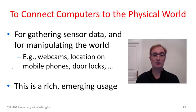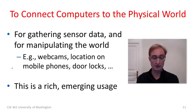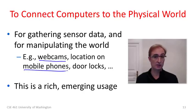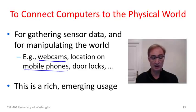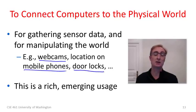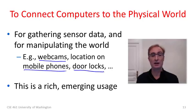Yet another emerging usage is to connect the physical world with computers across the network. We can do this by gathering sensor data and actuating devices to manipulate the world. Mobile phones gather sensor data such as location, audio, and video and send it across the network. For example, you can buy automated door locks where you send a message from across the internet to open your front door. This is a rich emerging usage that we expect to see more of on the internet.